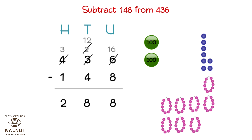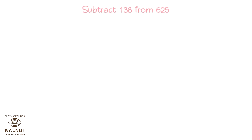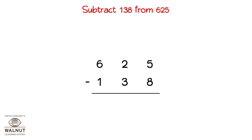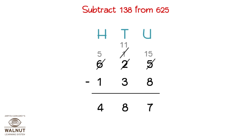It is not possible to keep drawing pictures all the time, so let's do it only with the numbers. Subtract 138 from 625. We write the numbers one below the other, write the place values, and look at the units place. We have to borrow, then break a 10 and add it to the units, subtract the units, then borrow from the hundreds to subtract the tens, then subtract the hundreds to get the final answer, which is 487.